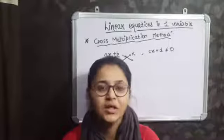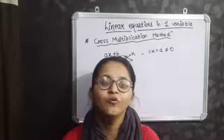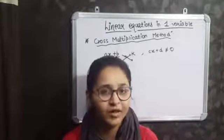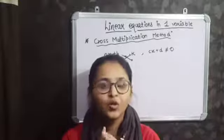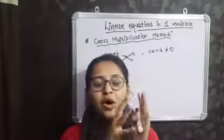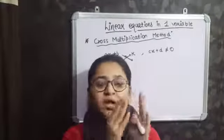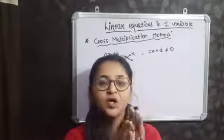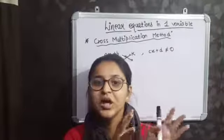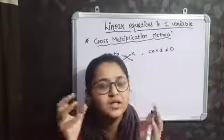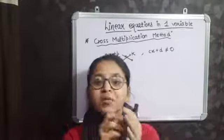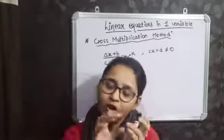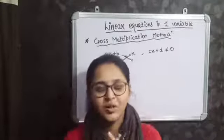Earlier we studied the rule of transposition to solve the linear equation in one variable. Rule of transposing means you are shifting one side to another side — shifting plus to minus, minus to plus, and multiplication to division or division to multiplication.